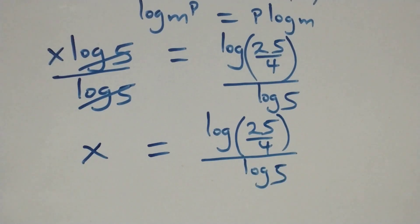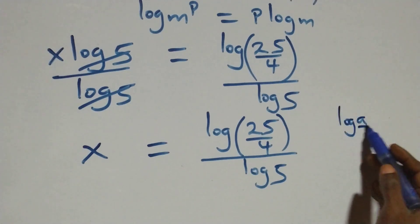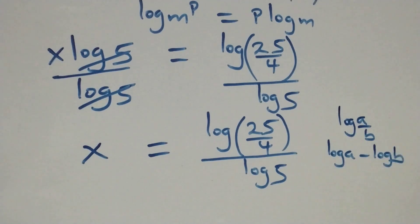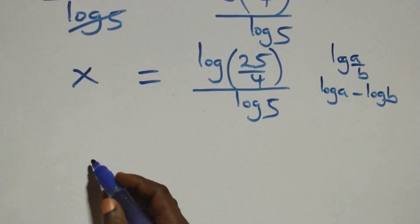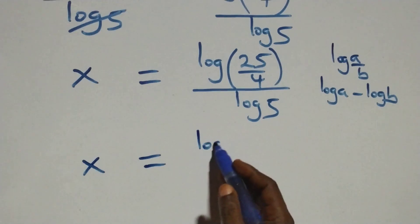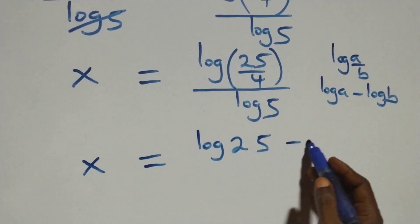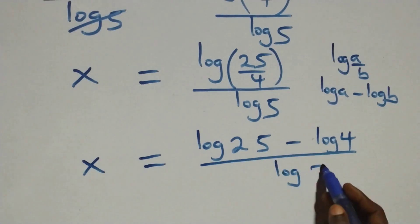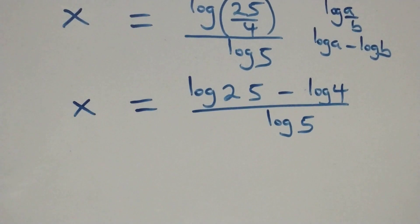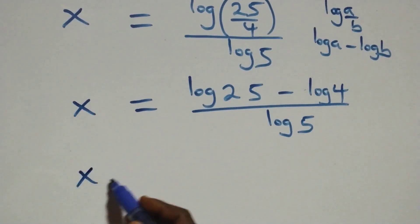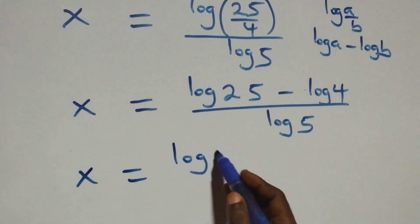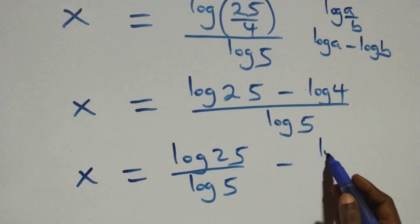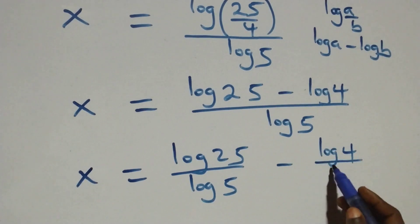The next step follows from the law of logarithms: when we have log(a over b), we can write this as log a minus log b. So what we have becomes x equals log 25 minus log 4, all over log 5. Separating into two fractions: x equals log 25 over log 5, minus log 4 over log 5.